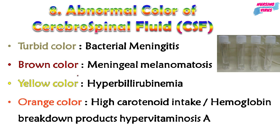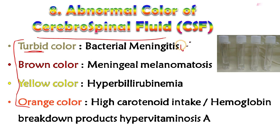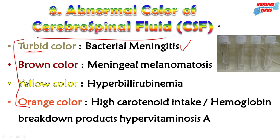The eighth topic is the abnormal color of CSF — cerebrospinal fluid. Turbid color indicates bacterial meningitis. Brown color indicates meningeal melanomatosis. Yellow color indicates hyperbilirubinemia. Orange color indicates high carotenoid intake, hemoglobin breakdown products, or hypervitaminosis A. These are the reasons for changes in CSF fluid color.